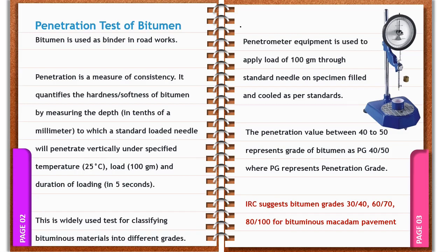There are mainly 3 methods by which we can find out the grades of bitumen: penetration grade, viscosity grade, and ductility. The penetrometer equipment is used to apply a standard load of 100 grams through a standard dimensional needle on a specific bituminous sample filled and cooled as per standard given conditions. A penetration value between 40 to 50 represents a grade of bitumen as PG 40/50, where PG represents penetration grade.